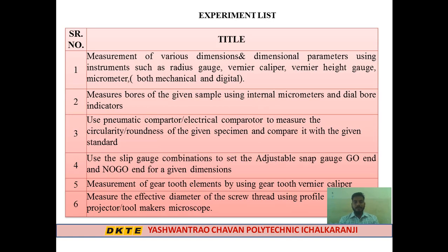This covers the practical and experimental list. A total of 15 experiments are performed in the practical. As per MSBT norms, a minimum of 12 to 13 experiments must be completed. The experiment list follows the manual norms. The completed manual with experiment results contributes 25 marks.